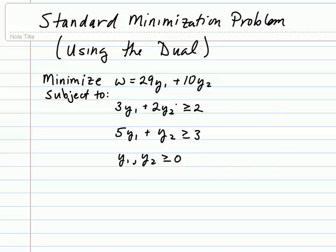Notice that the constraints are linear inequality constraints, where the constants are non-negative and the inequality symbols are greater than or equal to. We also have our non-negativity constraints placed on our variables. Also notice that we are minimizing here.